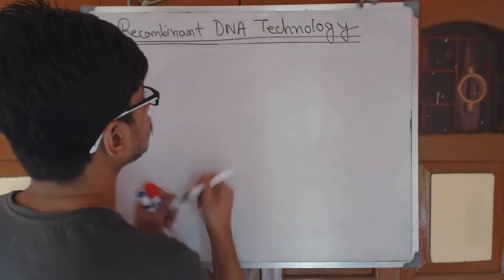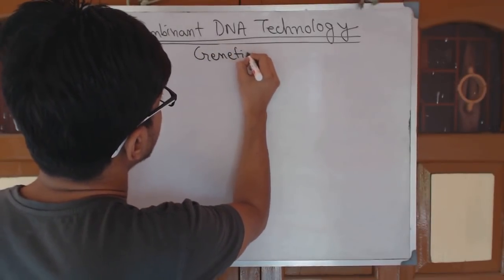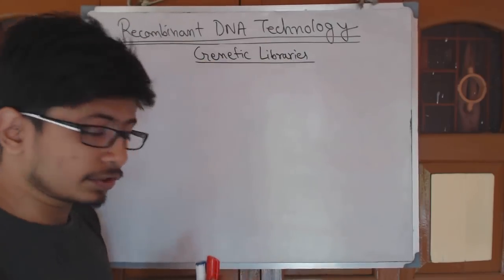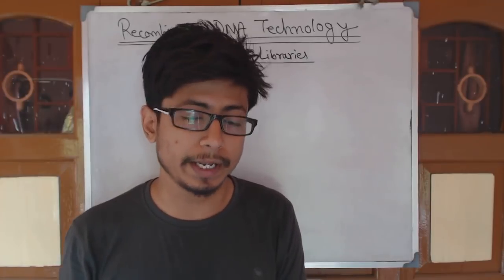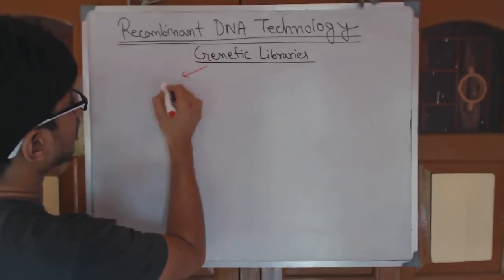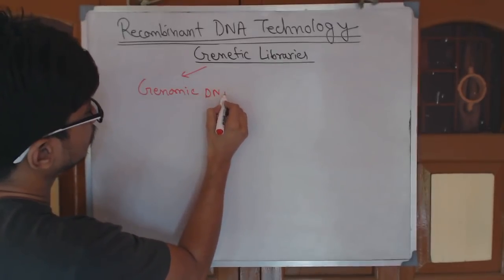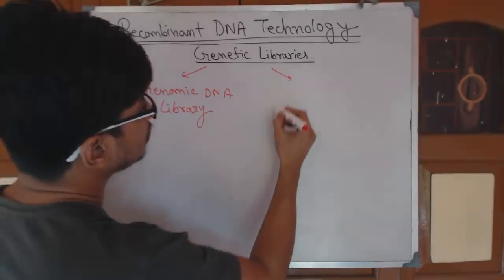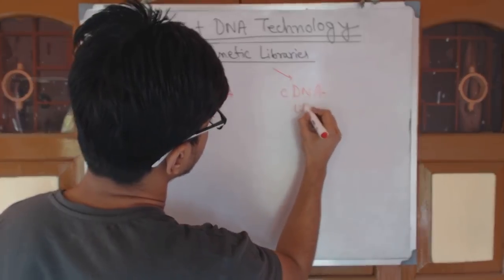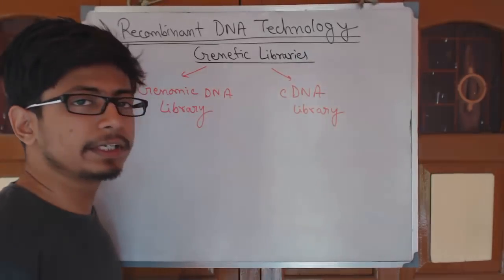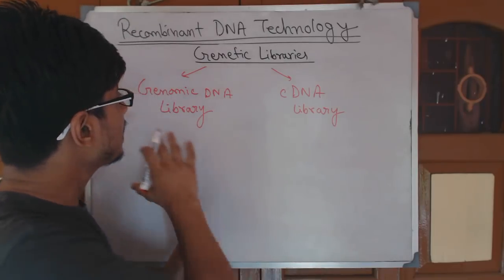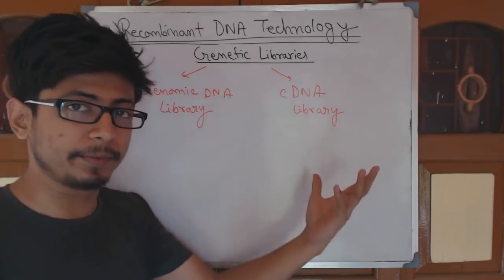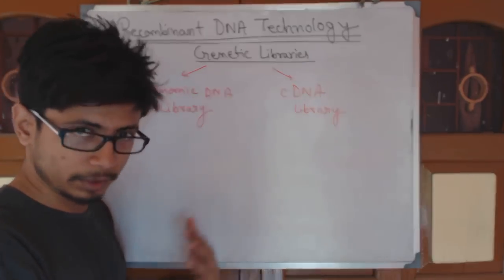So let's talk about genetic libraries. Genetic libraries are of majorly two different types. One is the genomic libraries or genomic DNA library, and the second type is cDNA library. cDNA library is also known as complementary DNA library. Genomic DNA library is different. So what are these two things — genomic library and cDNA library — and what are the differences between them?